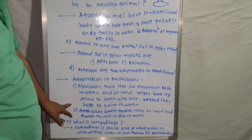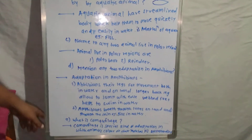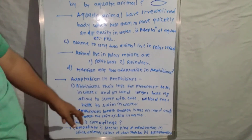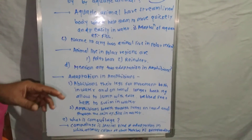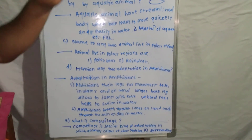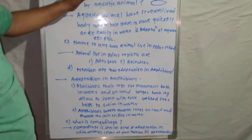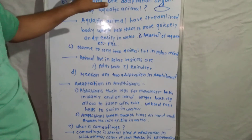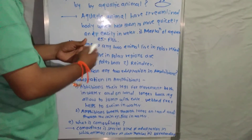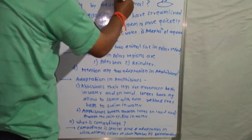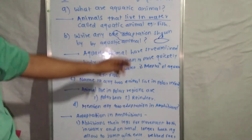The last question: 'What is camouflage?' Camouflage is a special kind of adaptation in which animals match their color with the surrounding environment. For example, if the surroundings are blue, the animal changes its body color to blue to match. Because of this matching color, we cannot easily see the animal in its surroundings.